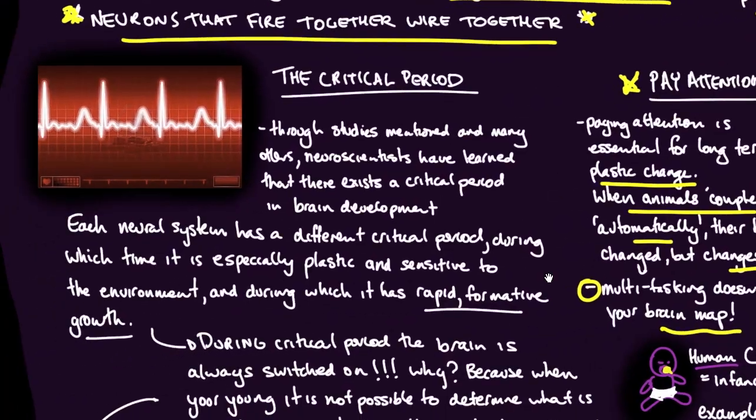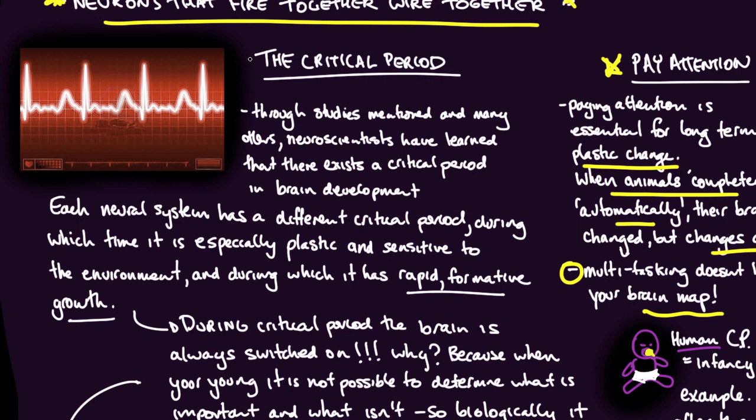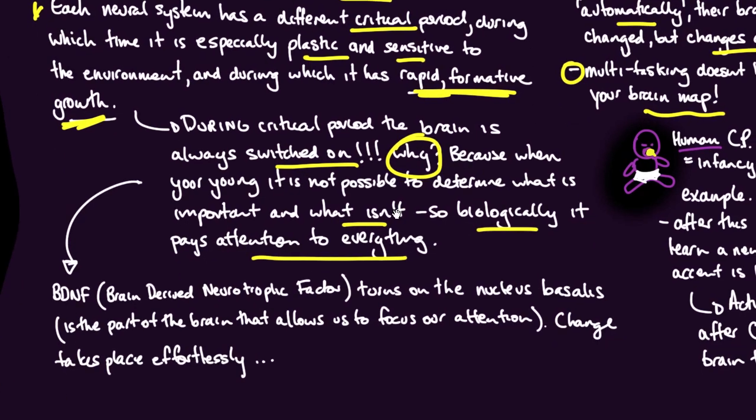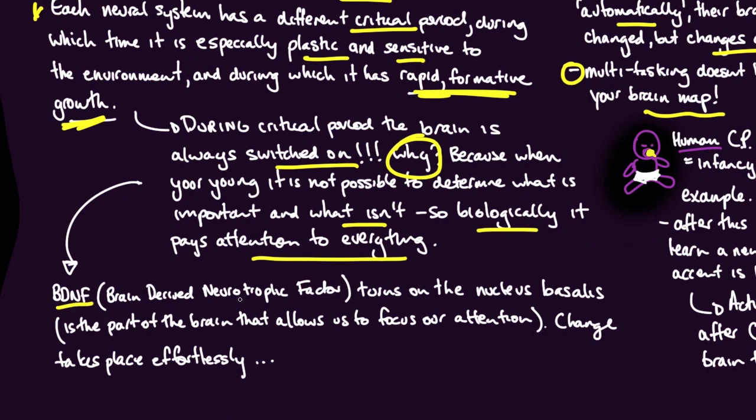We touched on with the kitten this very important area called the critical period. Through studies mentioned and many others, neuroscientists have learned that there exists a critical period in brain development. Each neural system has a different critical period, during which time it is especially plastic and sensitive to the environment, and during which it has rapid formative growth. During the critical period, the brain is always switched on. Why? Because when you're young, it is not possible to determine what is important and what isn't, so biologically it pays attention to everything. The process itself within the brain is a chemical called BDNF, brain-derived neurotrophic factor. It actually turns on the nucleus basalis, which is the part of the brain that allows us to focus our attention.